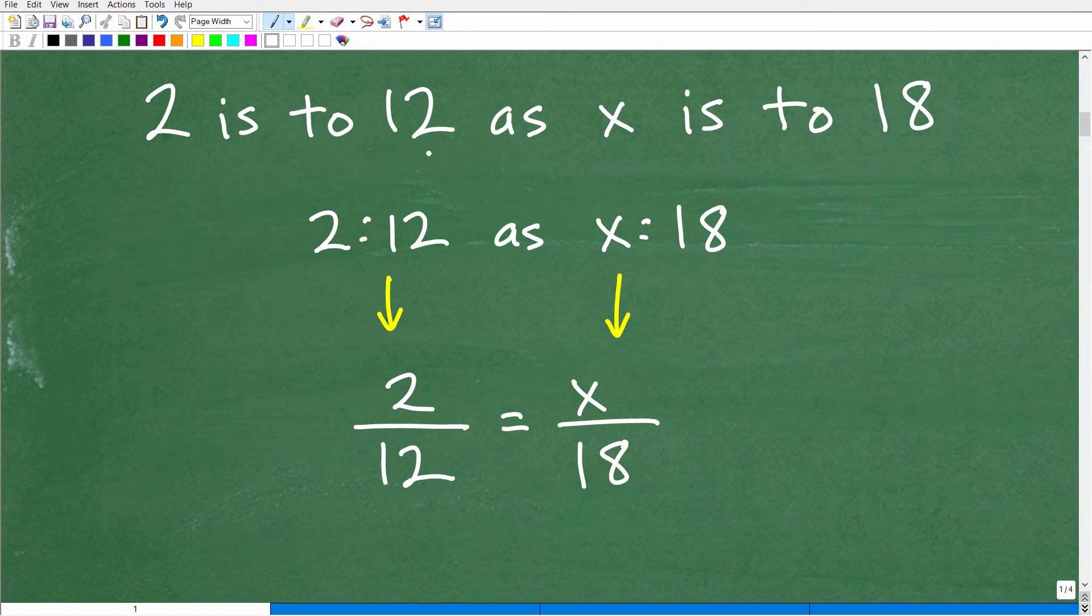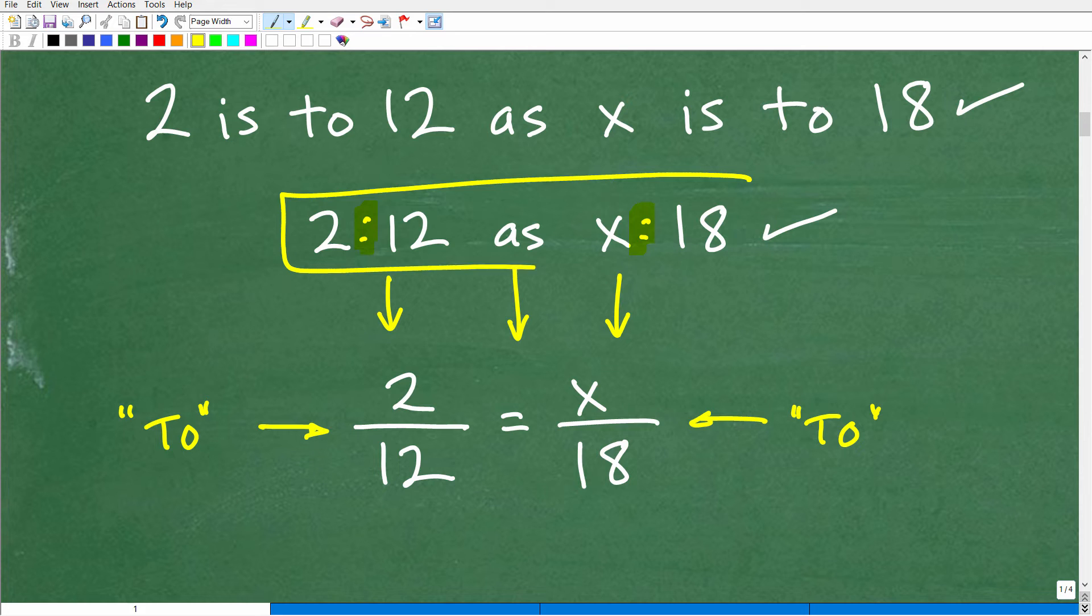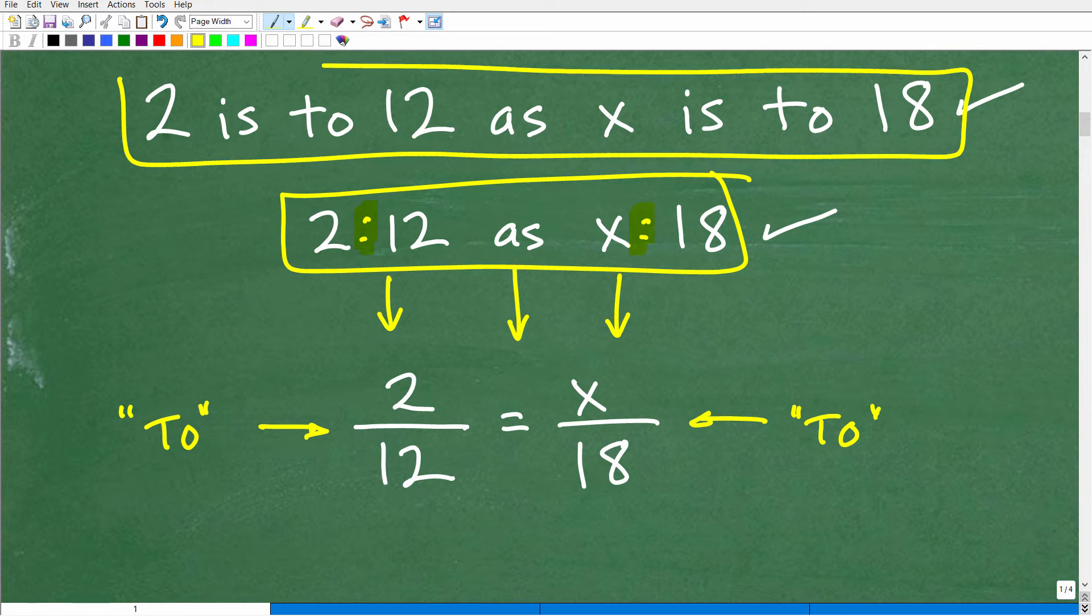So again, 2 is to 12 as x is to 18. We could see it written out this way, or we can use the colon notation. Or you could see it this way, as two fractions. So here we have 2. Let me just go ahead and highlight this. This fraction bar, this is 2 is to 12. Now, we have 2 over 12. But any time you see something like this, you can interpret the fraction bar as the word 'to'. Sometimes you could do it as the word 'per', but that's when we're dealing with rates.